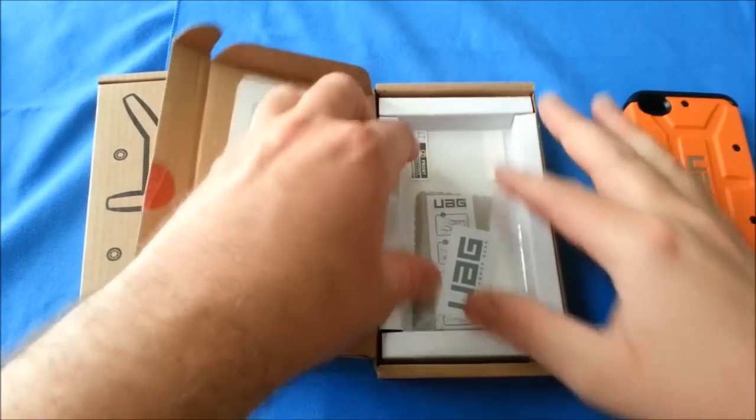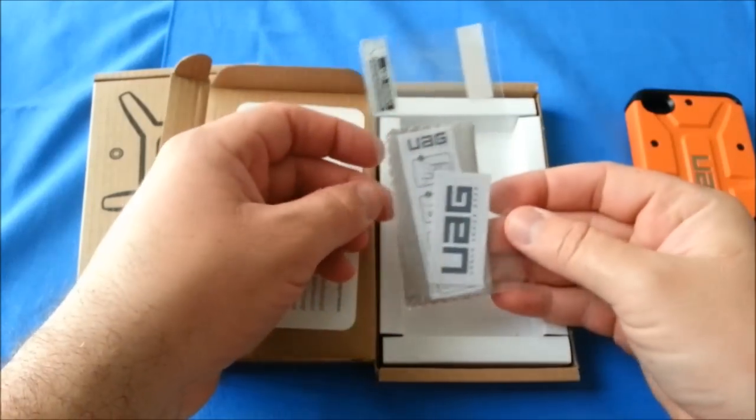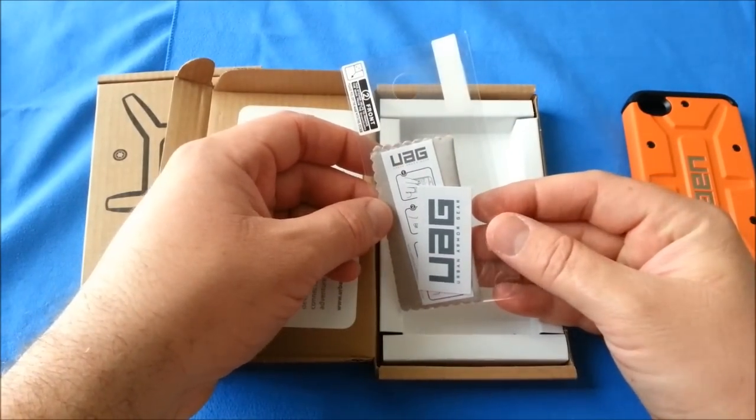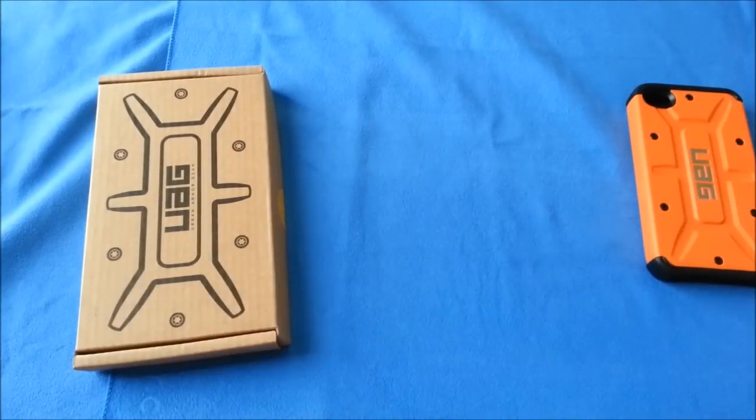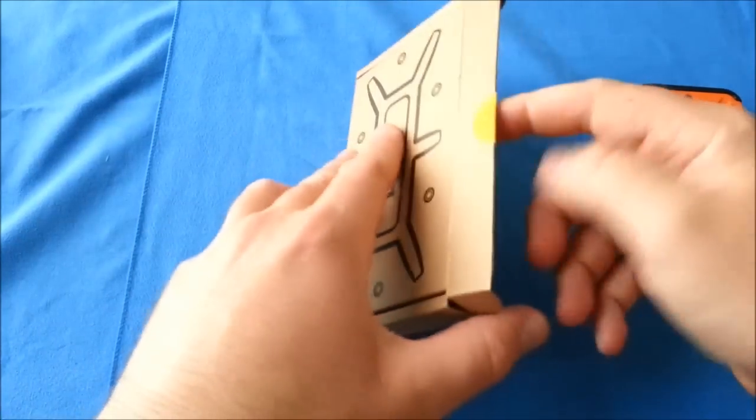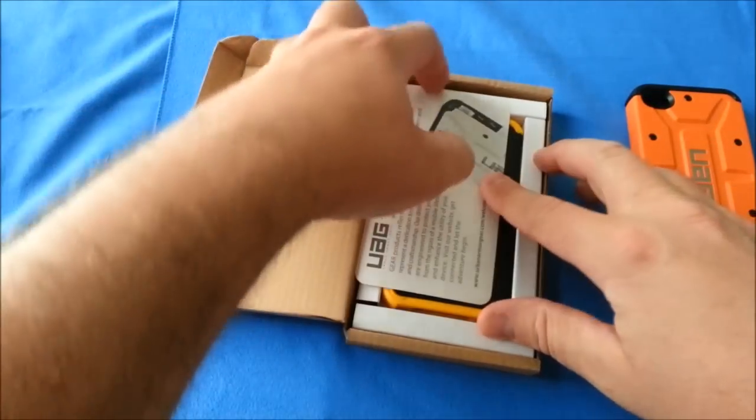And there's the case itself, and each one does come with a screen shield, microfiber cloth, and a little squeegee. So you will have all-around protection for your iPhone 4 or iPhone 4S. Let's go ahead and get both of these different colors out and take a look at them.